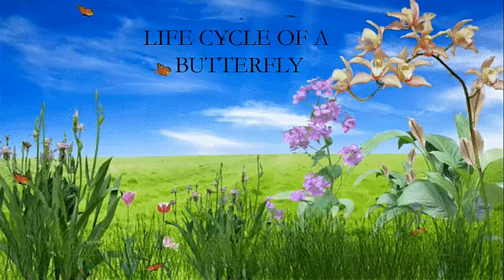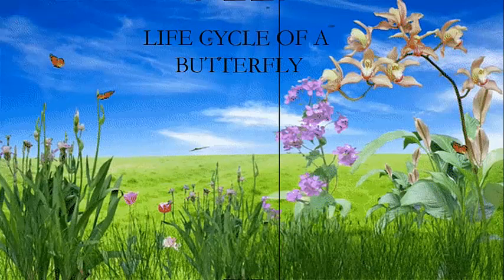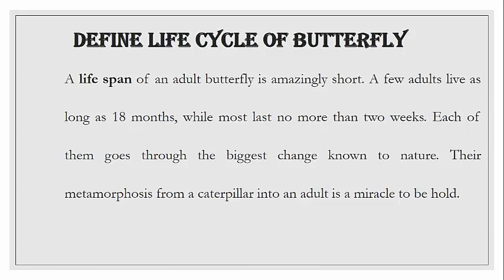I will define the life cycle of a butterfly. The lifespan of an adult butterfly is amazingly very short — a few adults live as long as 18 months, whereas most last no more than two weeks. Each of them goes through the biggest change known to nature, and their metamorphosis from a caterpillar into an adult butterfly is a miracle to behold.